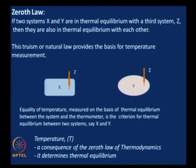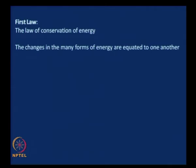Therefore, the equality of temperature measured on the basis of thermal equilibrium between the system and the thermometer is the criterion for thermal equilibrium between the two systems, x and y. Temperature T can be considered a consequence of the zeroth law of thermodynamics, and it is the one that determines thermal equilibrium. Now let us look at the first law. The first law is nothing but the law of conservation of energy.